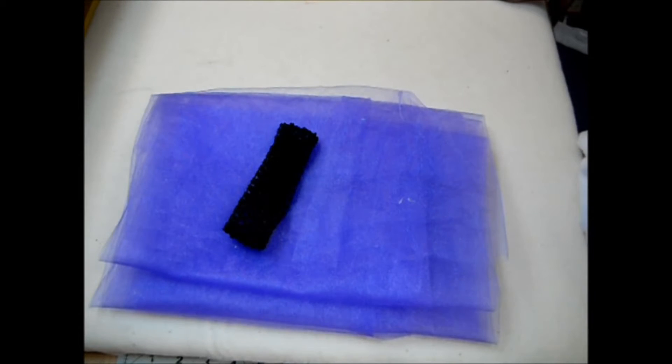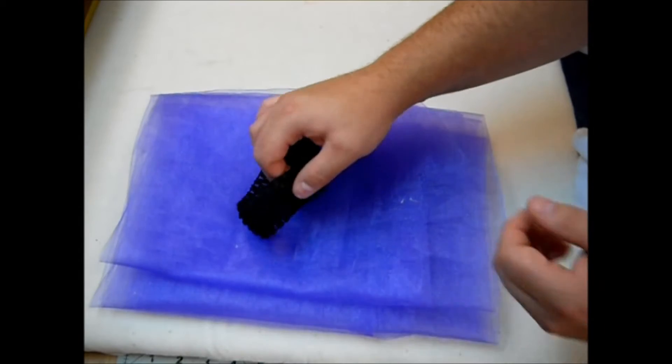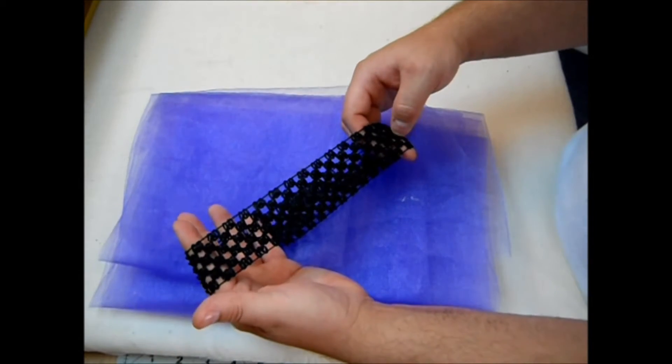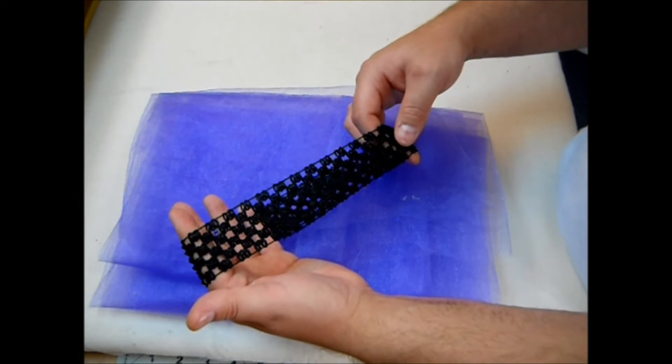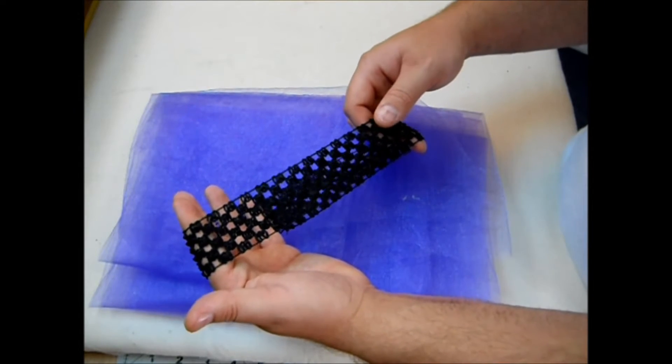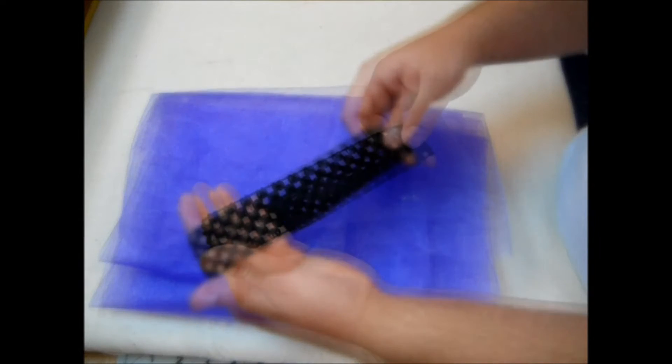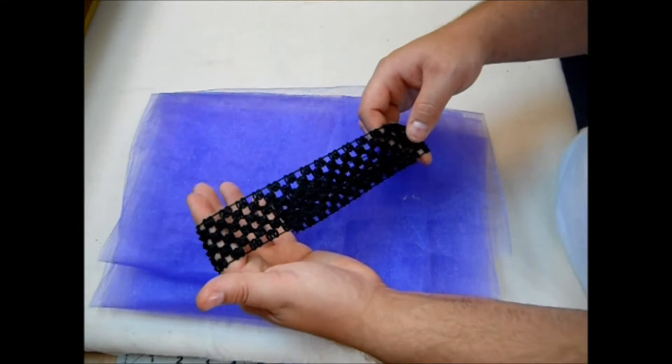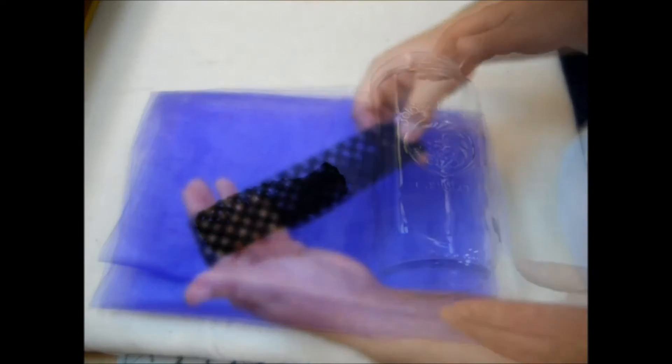You're also going to need a knit headband. I got this one at Walmart. It came in a three-pack for a couple dollars. It had two white ones and one black one, and I'm going to use the black one today. You can find these in the craft section with the buttons and the zippers and things like that.